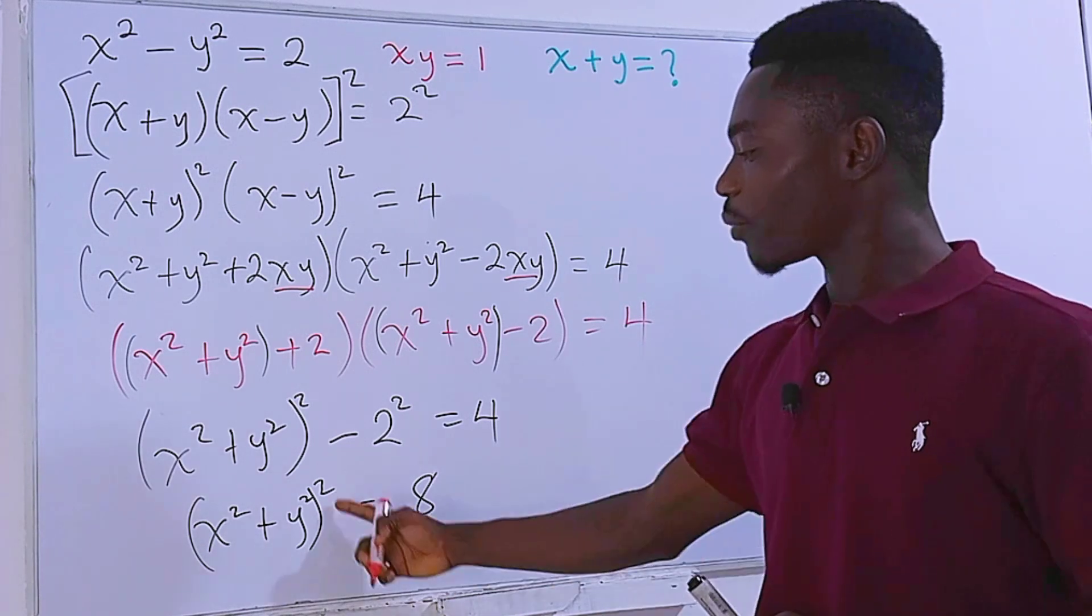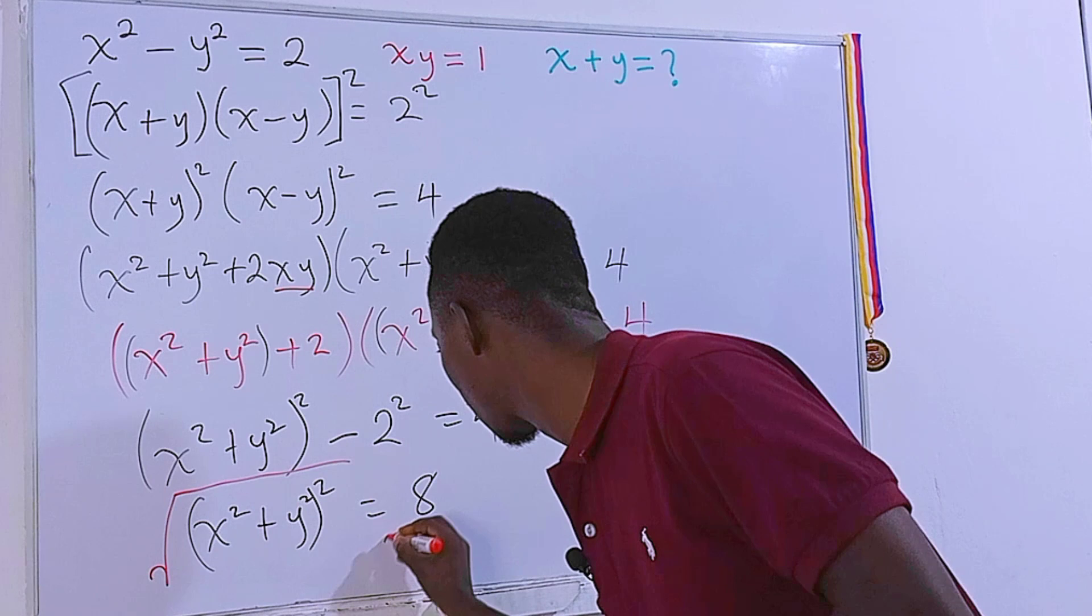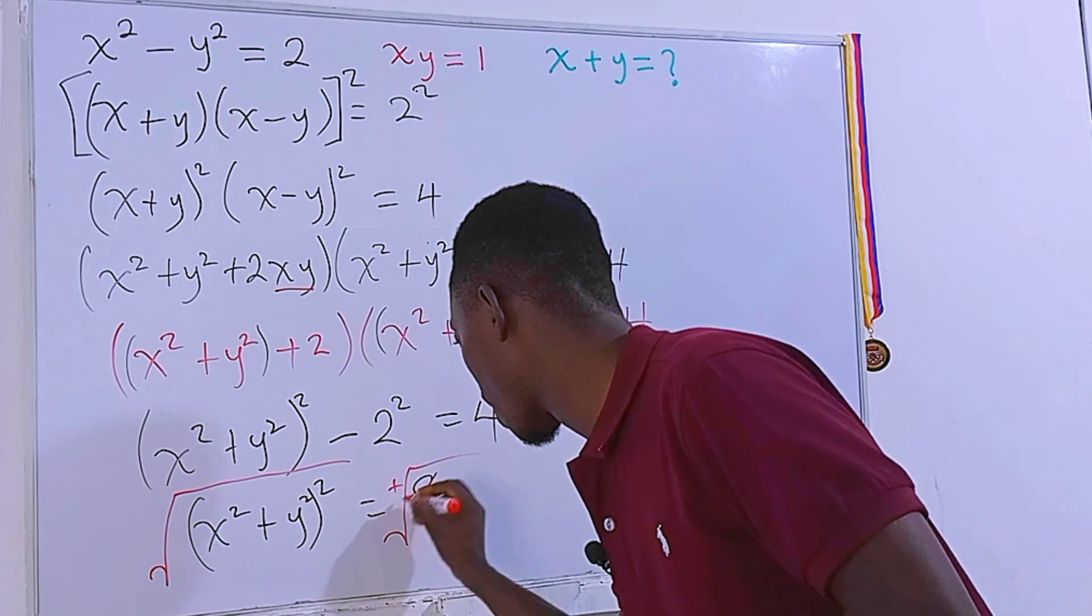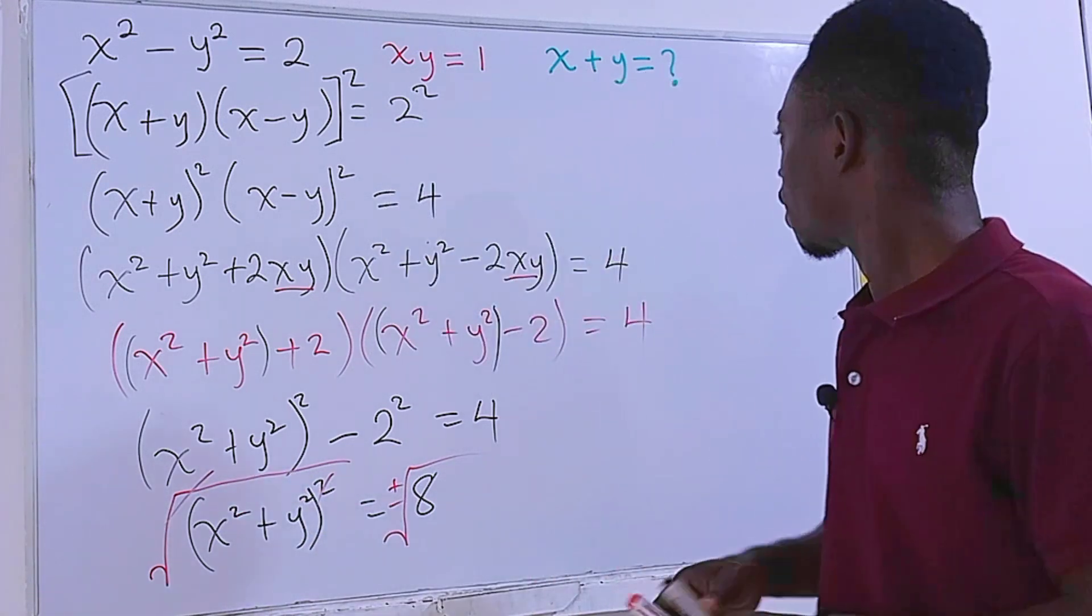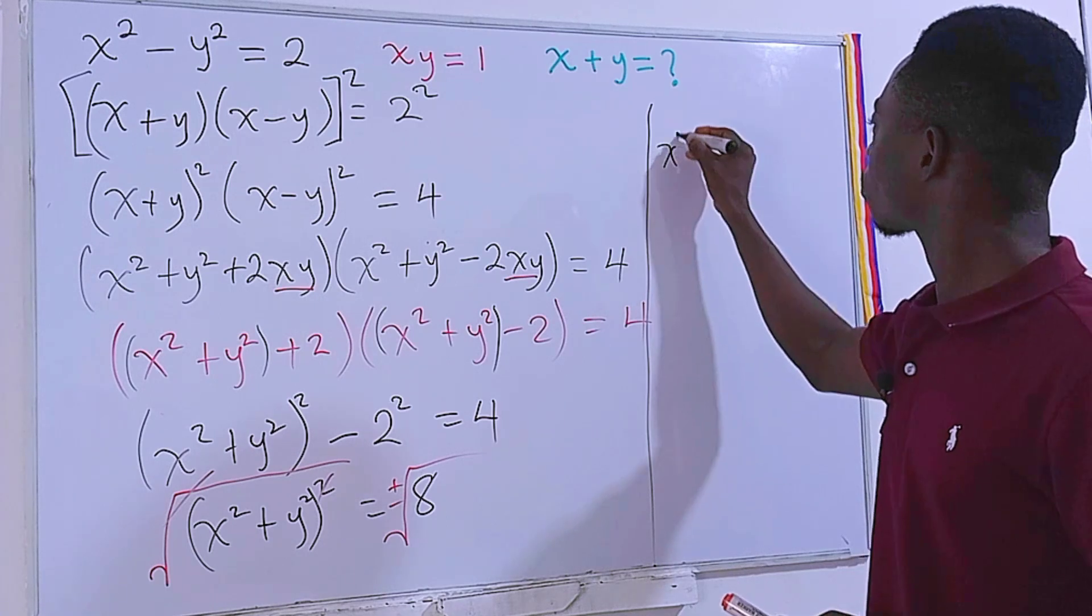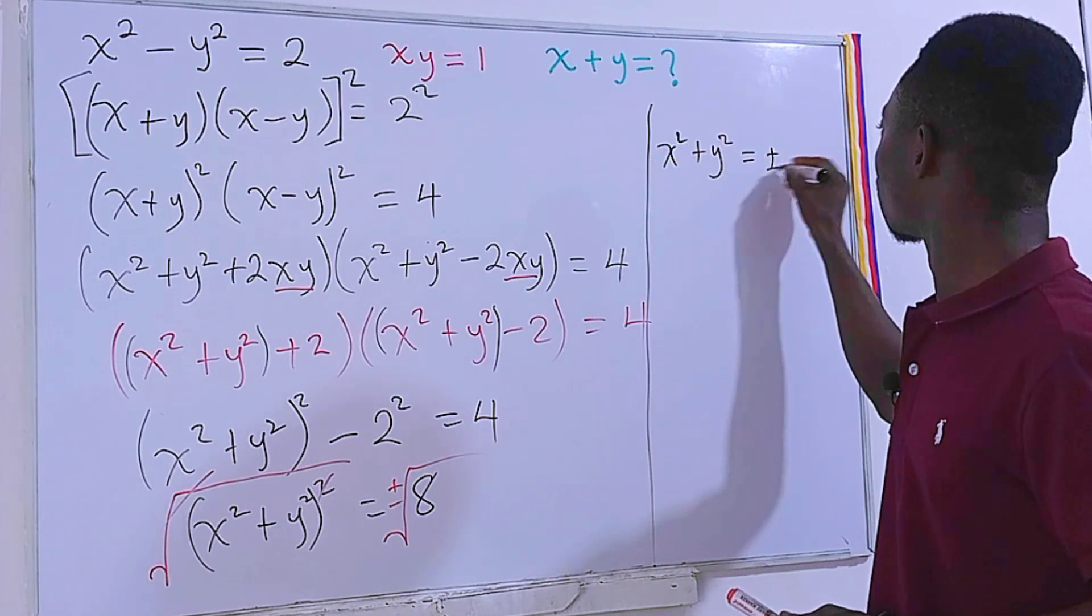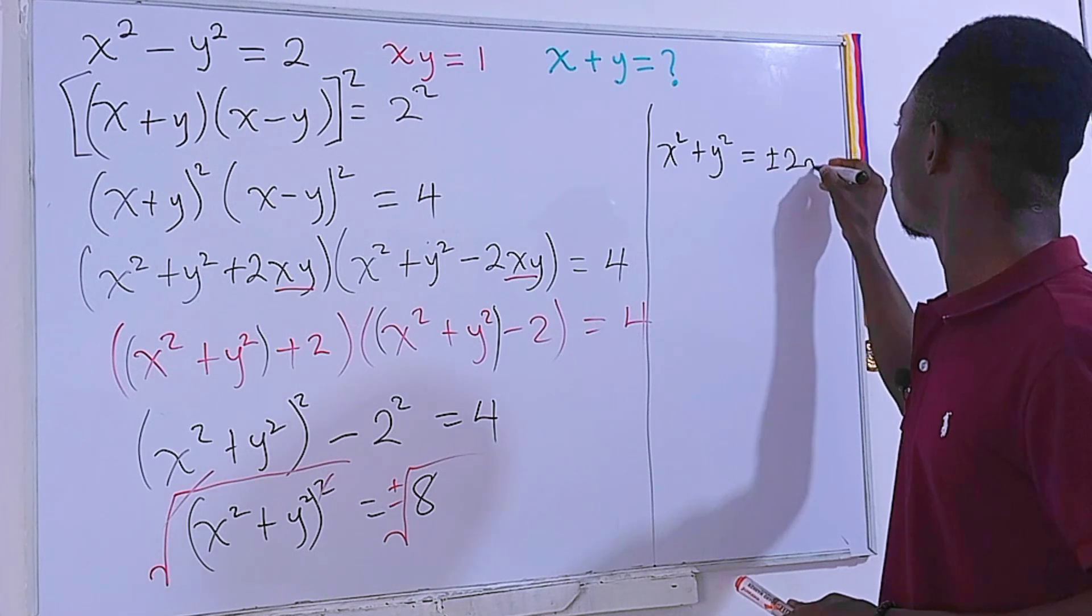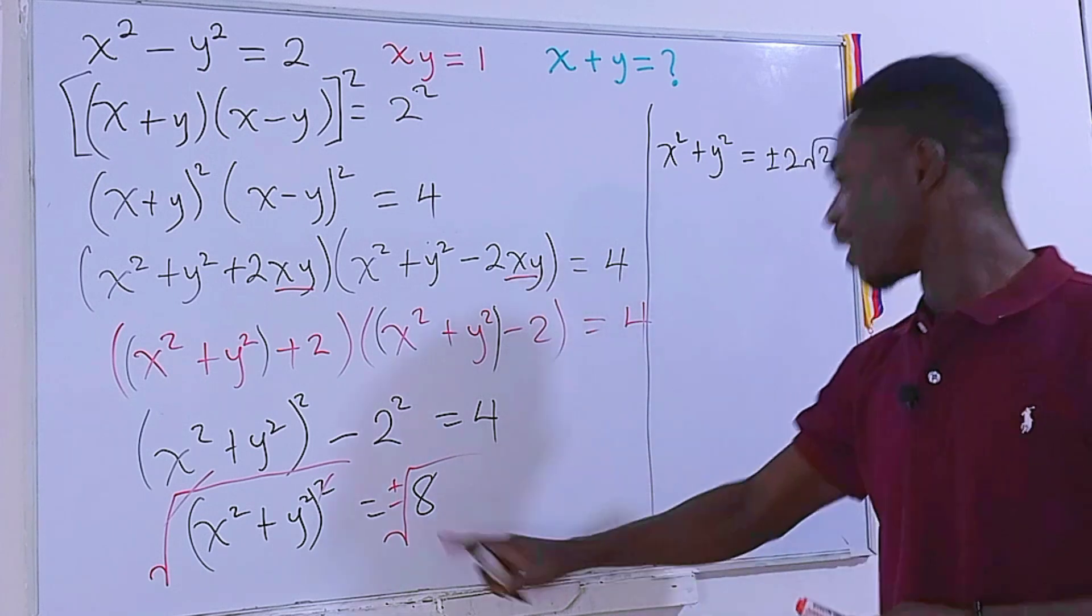And now, let's get rid of the square here by taking square root on each side of the equation. But remember, plus or minus is very important. This square will cancel out this square root. Then, the new equation is going to be x squared plus y squared is equal to plus or minus 2 root 2. That is square root of 8.